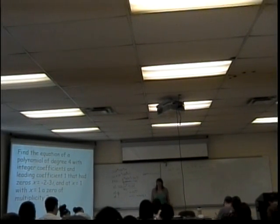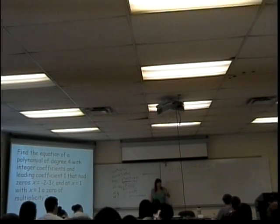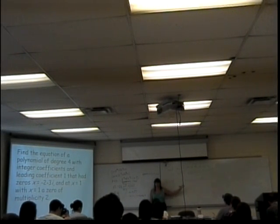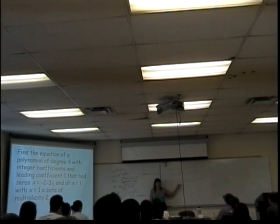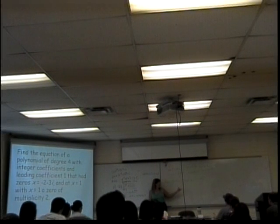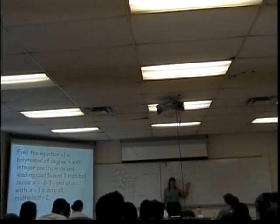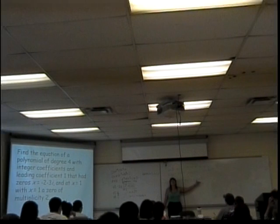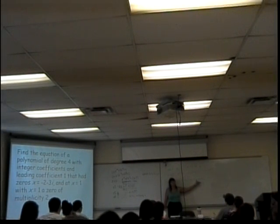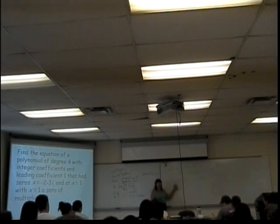Unfortunately, we get spoiled at this point in WebWork because it hasn't made us multiply any of these things out. But when it gets here, you have to do some multiplying. WebWork can deal with x minus 1 and x minus 1, but it cannot deal with x and complex numbers. So these two — the complex conjugate pair — we have to multiply together so that the only things we're putting in are nice real numbers with the coefficients and constant terms. These two I can leave as is.